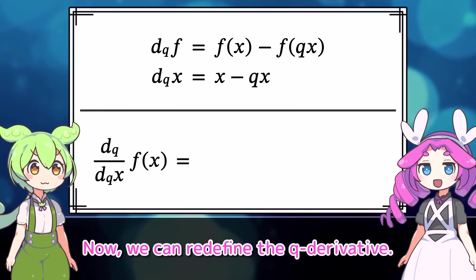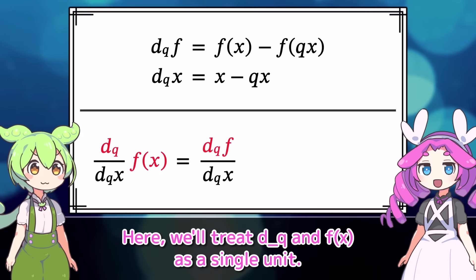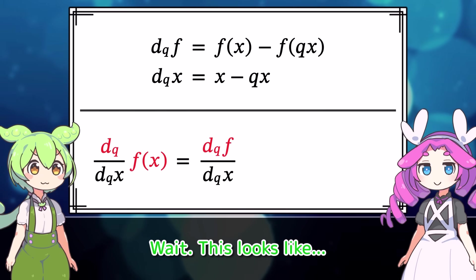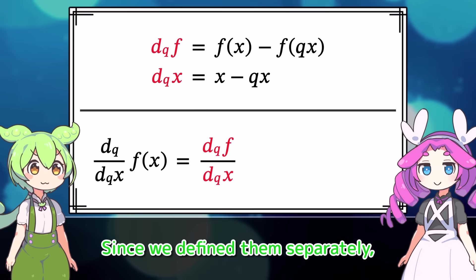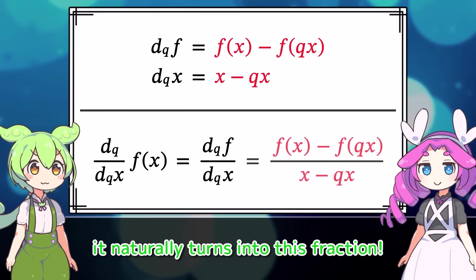Wait a second. If f is just x itself, that means f of x equals x and f of qx equals qx. Exactly. Now, we can redefine the q-derivative. Here we'll treat dq and f of x as a single unit.